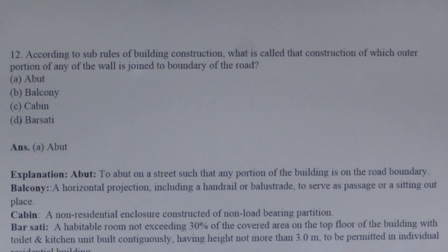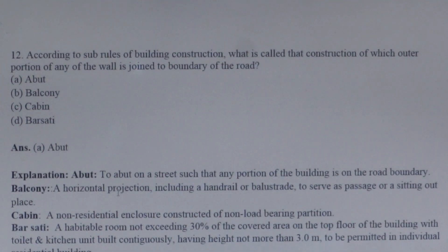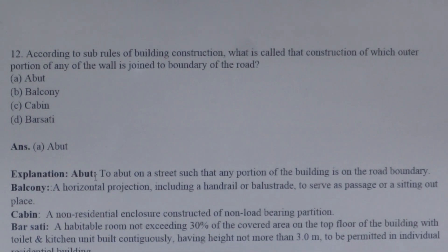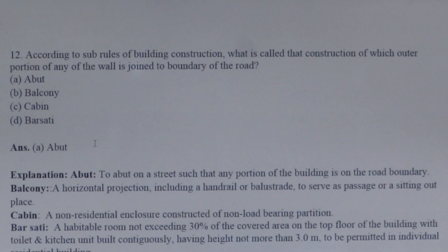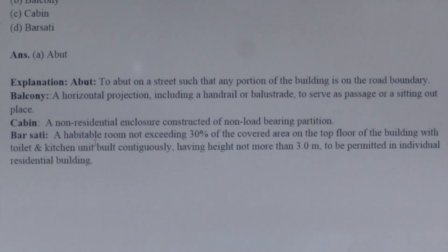Next question: According to building construction by-rules, when any outer portion of a building is joined to the boundary of the road, the building is said to be set over the road. A balcony is a horizontal projection including a handrail to serve as a sitting-out place. A cabin is a non-residential enclosure constructed of a non-load-bearing portion. A barsati is a habitable room constructed on the top floor.